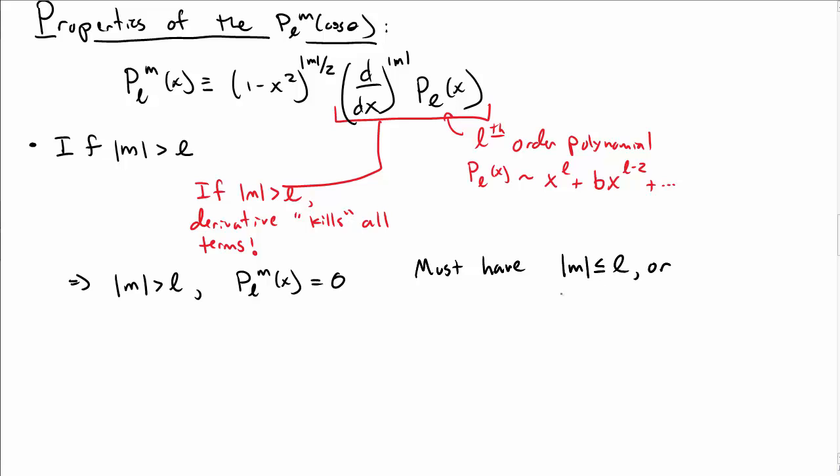So that's kind of interesting. What that tells us then is we must have |M| ≤ L, or rather that M is between -L and L. And that was a property we already saw of angular momentum. So it's pretty cool that we see it coming out of the associated Legendre functions as well.